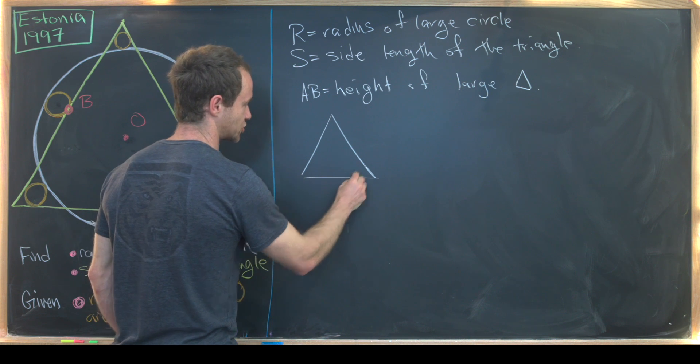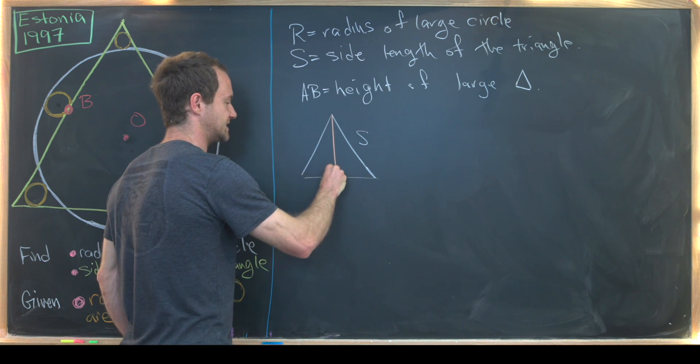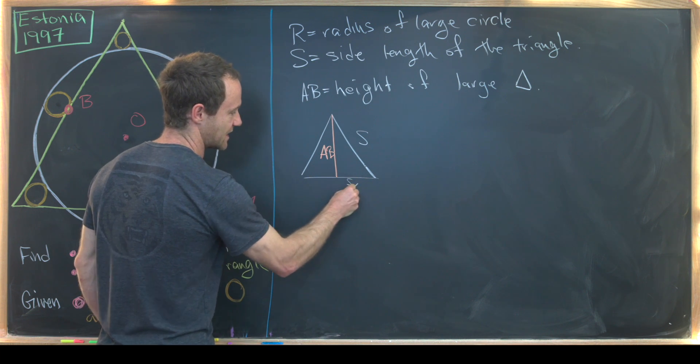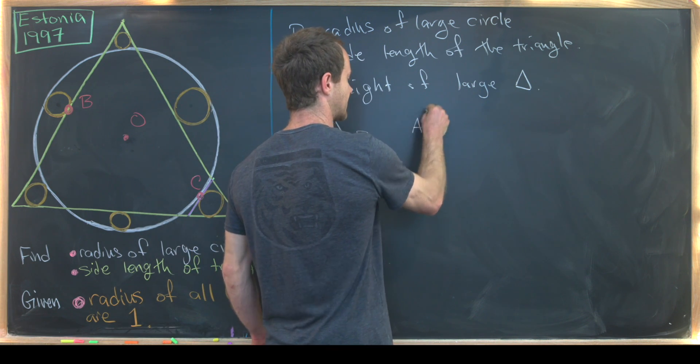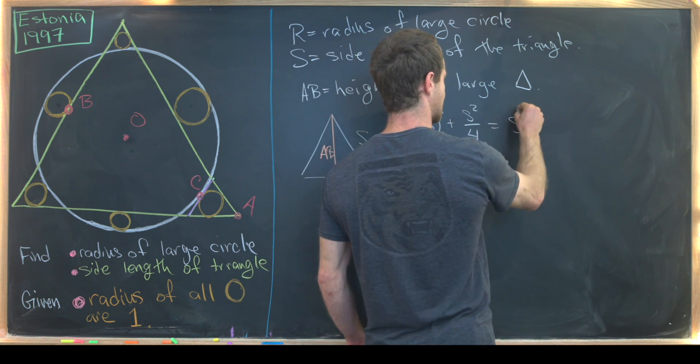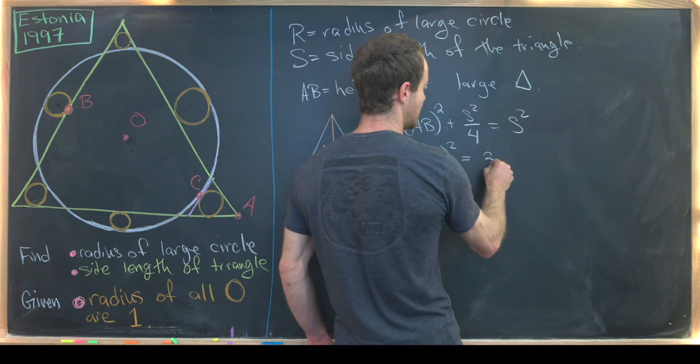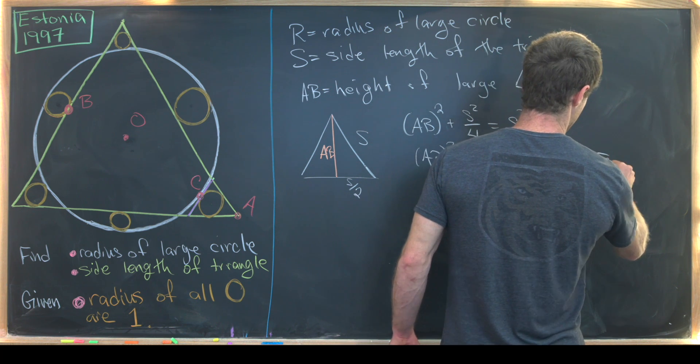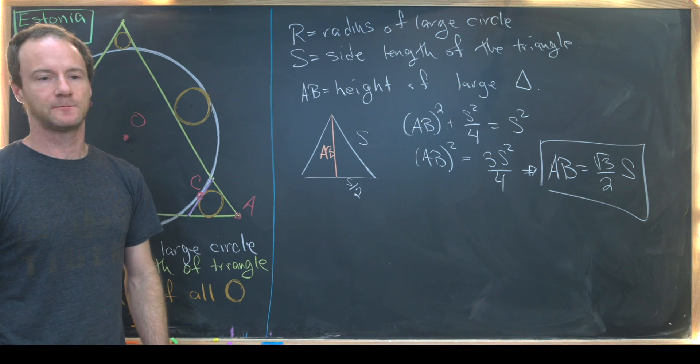So let's say this is our large triangle with side length S. This guy right here is distance AB just by our picture here. That makes this right here S over two. Now we can use the Pythagorean theorem to find AB. So notice that length AB squared plus S squared over four equals S squared. But that tells us that the length of AB squared is equal to three S squared over four. That means this length AB is equal to the square root of three over two times S, where S again is the side length of the triangle.